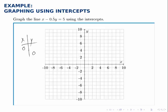If x is 0, the equation looks like 0 minus 0.5y equals 5, or just negative 0.5y equals 5. And then to solve for y, we divide both sides by negative 0.5, in which case y equals negative 10.